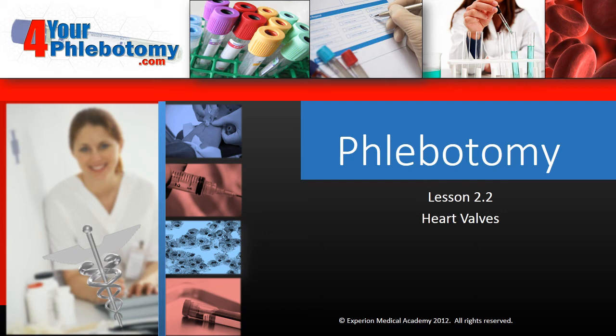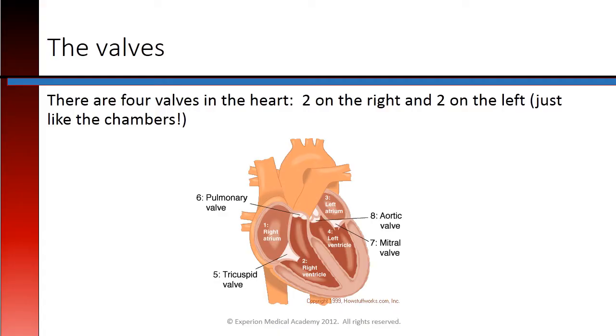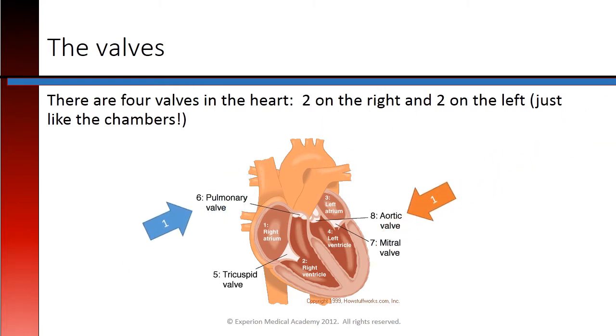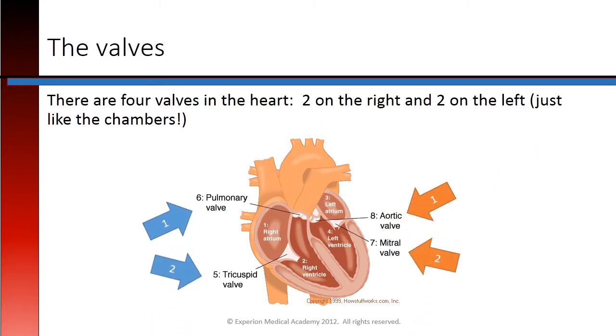Lobotomy, Lesson 2.2: Heart Valves. There are four valves in the heart, two on the right and two on the left, just like the chambers.